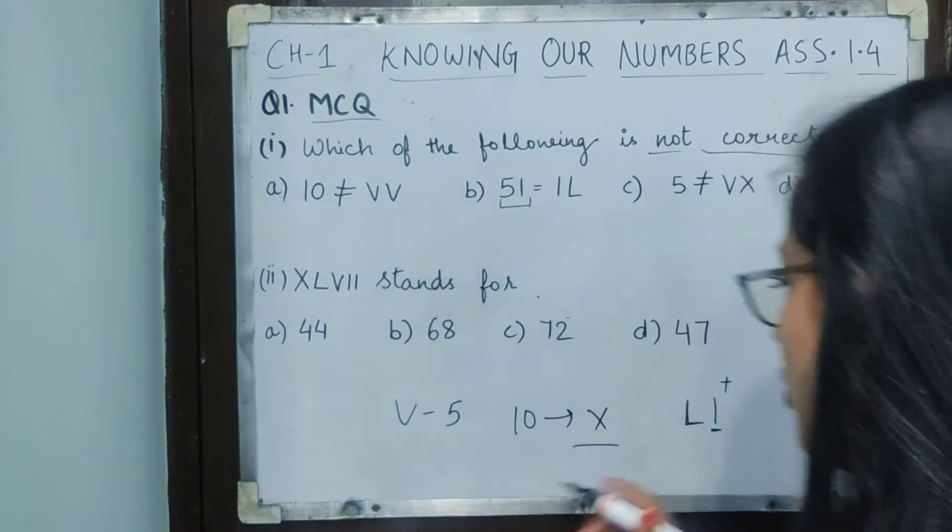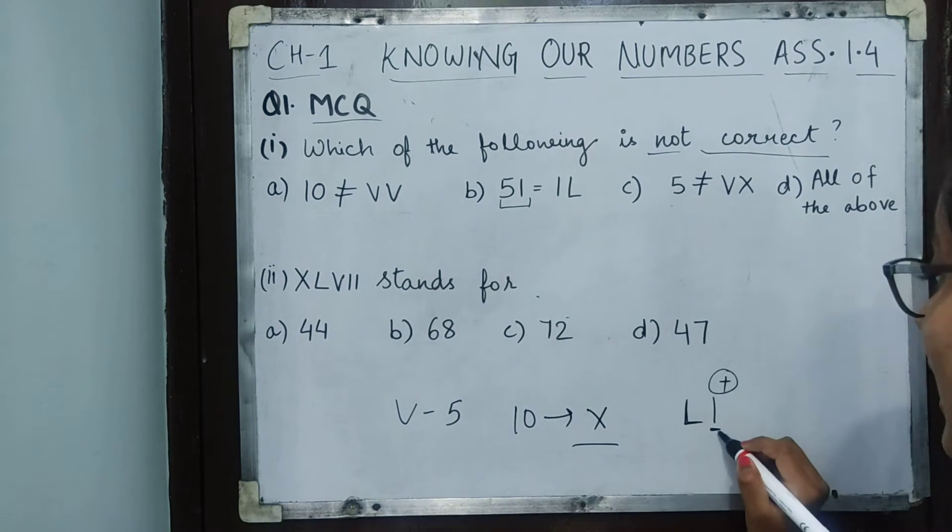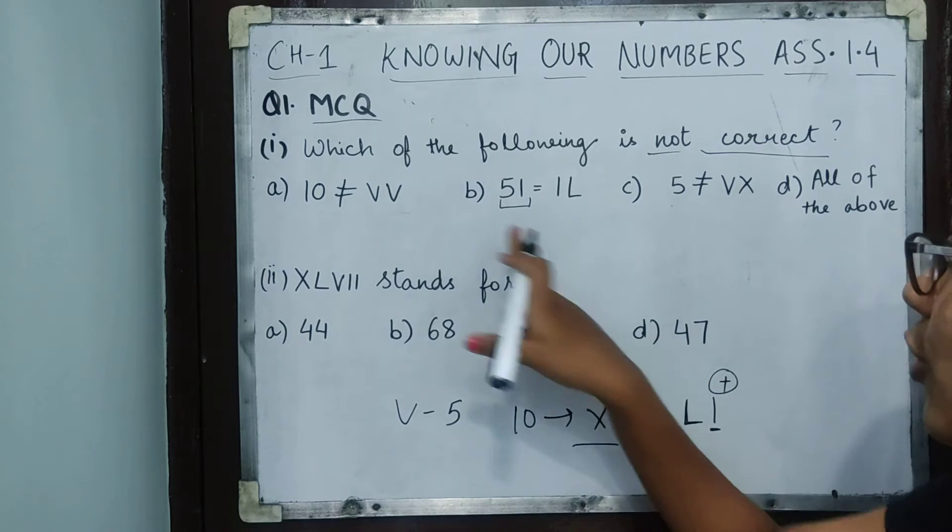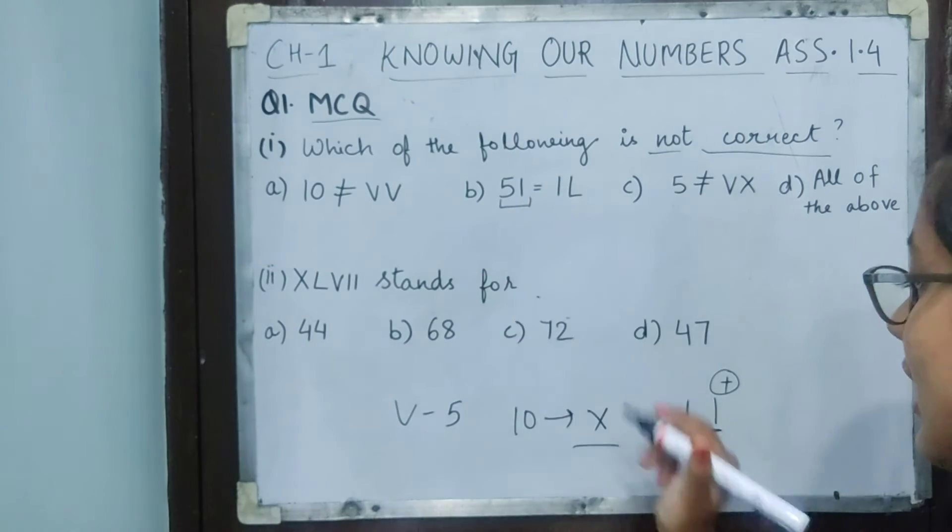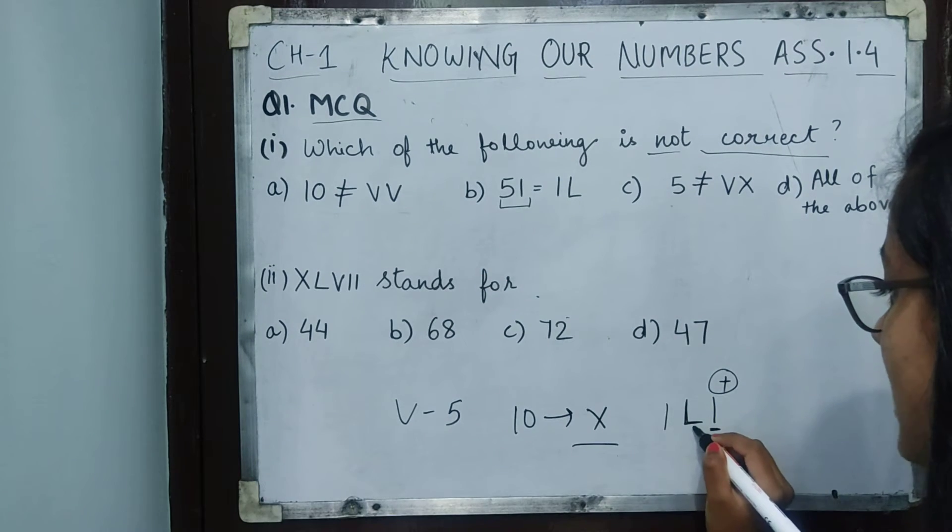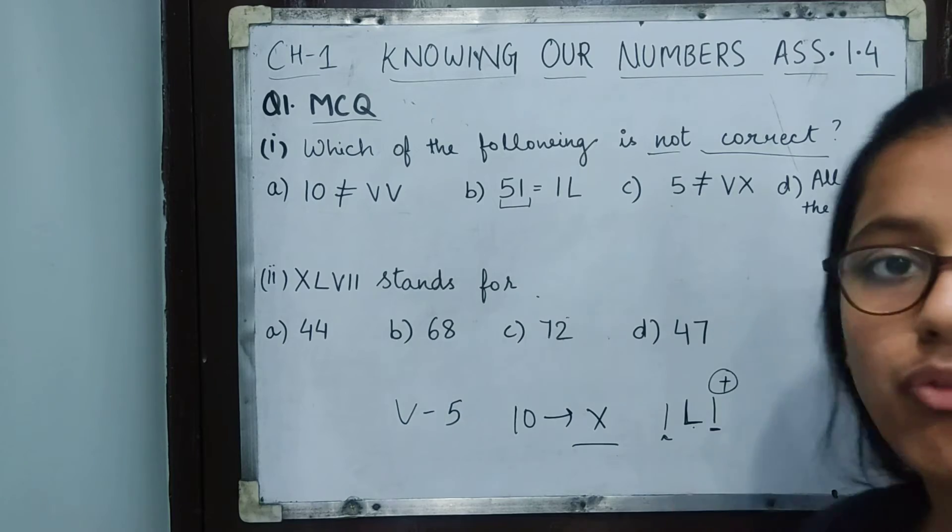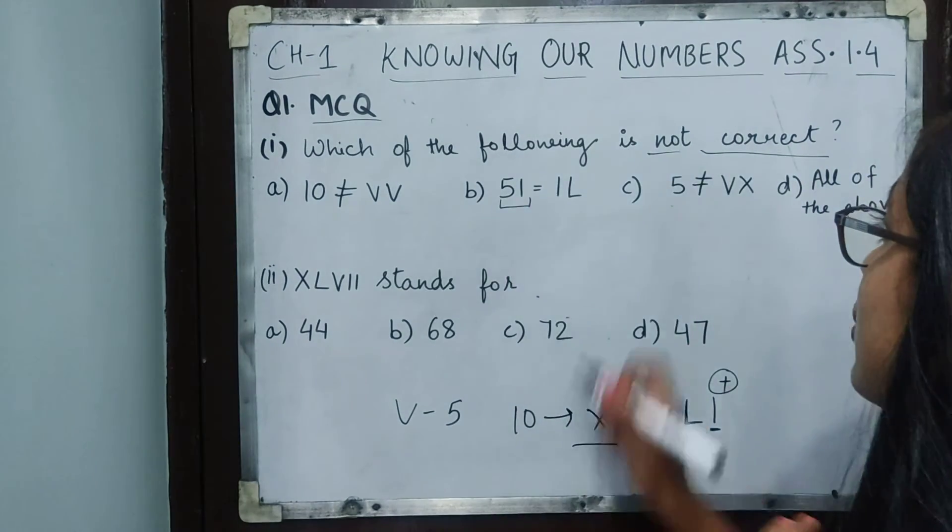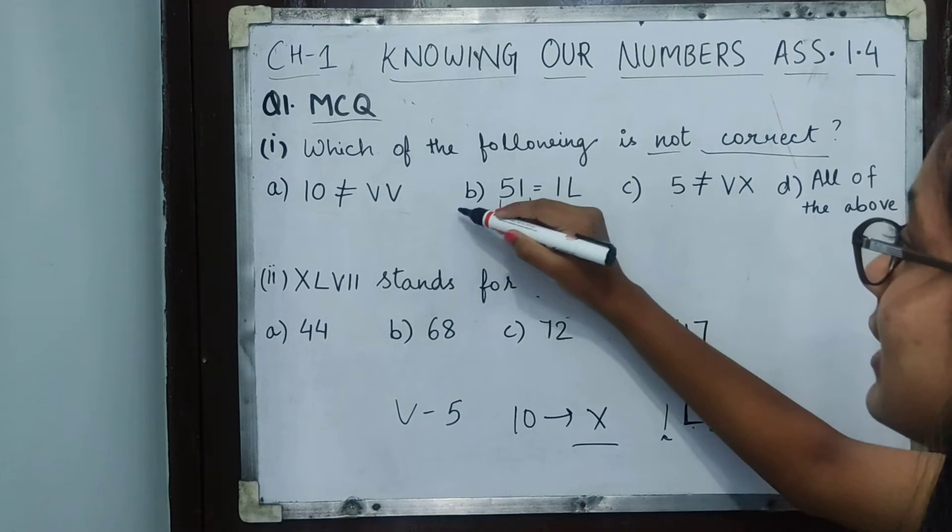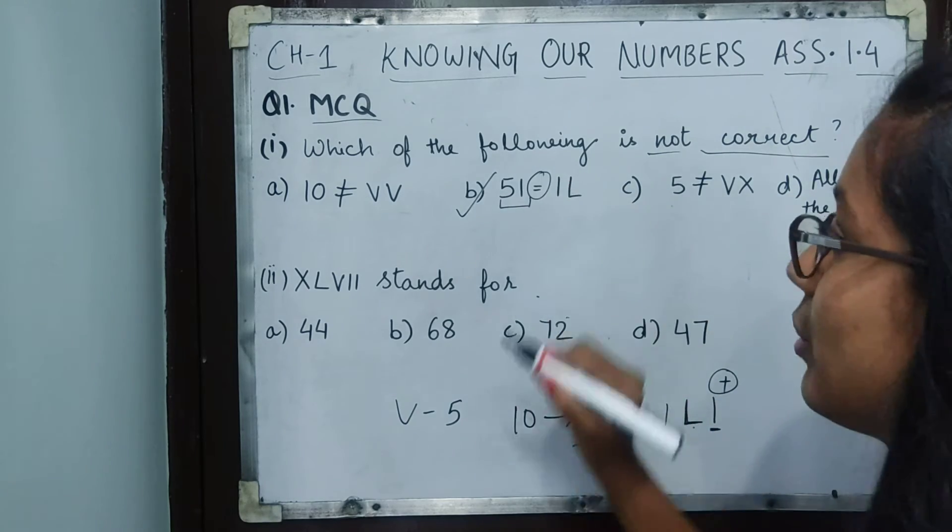So here it should be placed on the right side because we have to make 51, but they placed it on the left side. That means 50 minus 1, which becomes 49, and our answer is wrong. This one is not correct because equal to is written but they are not equal.